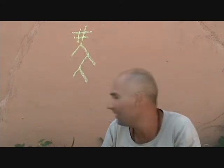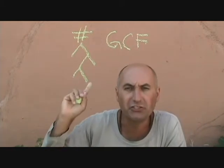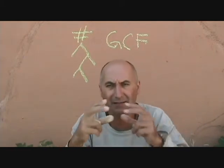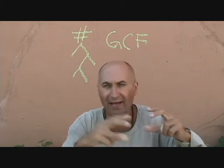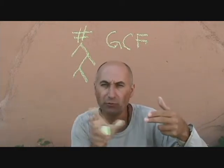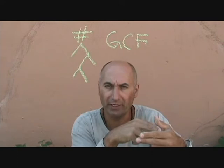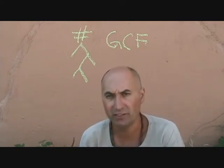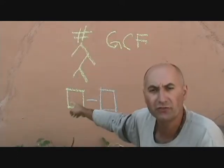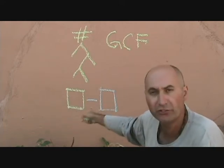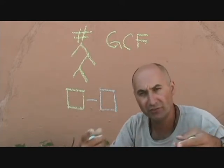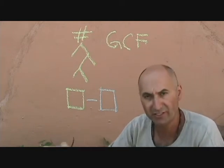We've talked about the GCF — the greatest common factor. With any multiple terms added or subtracted together, we look at those terms and see what's common between them. We've also talked about the difference of squares, where two things subtracted from each other can be factored into the square root of the first minus the square root of the second, times the square root of the first plus the square root of the second.